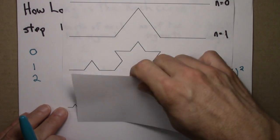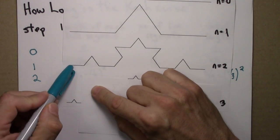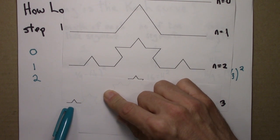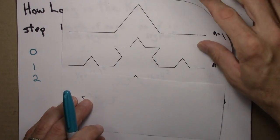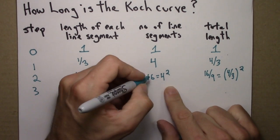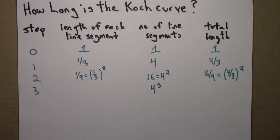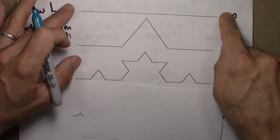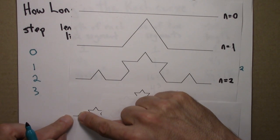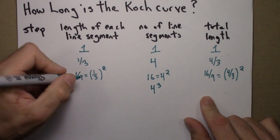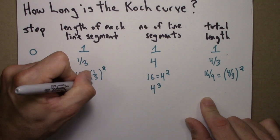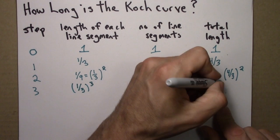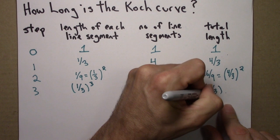At step three, I focus on one piece: I go from this length to this length, and I now have four times as many segments as before. At every step, the number of line segments is multiplied by four. So now I have four times four times four, which is four cubed. At each step, the length of each segment goes down by a factor of one-third: one, then one-third, then one-ninth, then one-third cubed. So the total length at step three is four-thirds cubed.